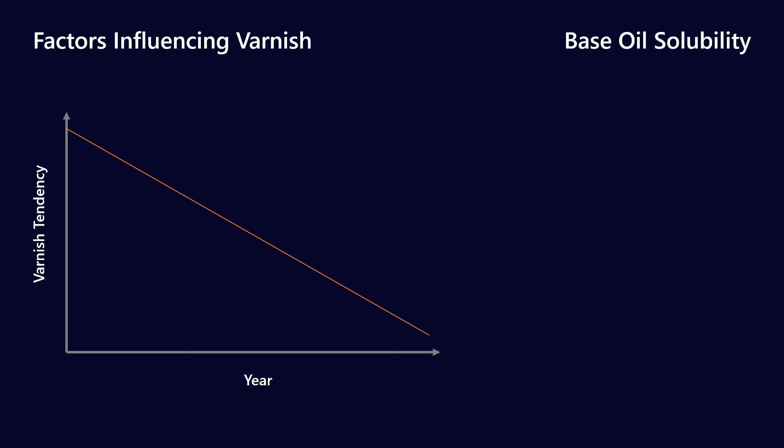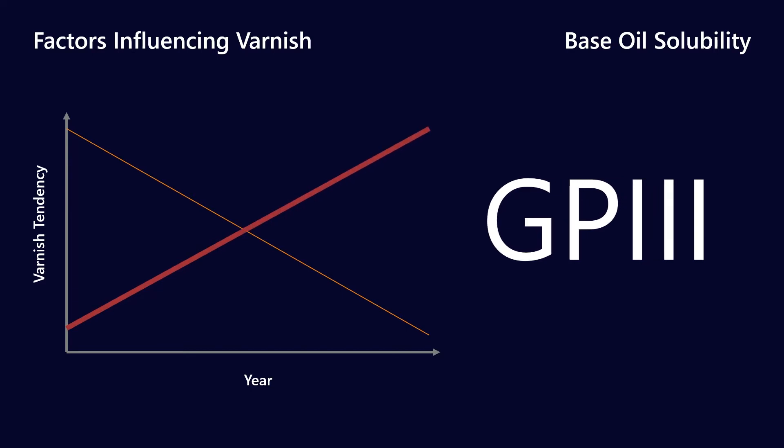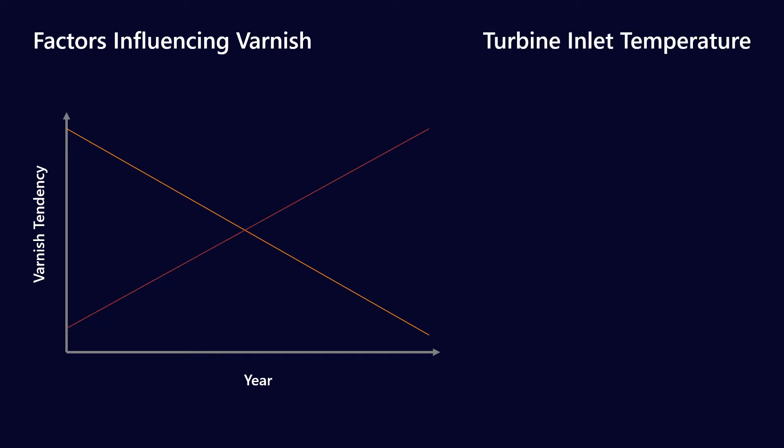However, as you change the base oil, you're also affecting base oil solubility. As covered in my previous video on API base oil groups, as you move from Group I to Group III you're actually reducing the solubility of the oil — particularly as you pull out some of the aromatic compounds, solubility decreases significantly. Solubility is something you need to prevent varnish: if you can hold components in solution so they never plate out, you won't have varnish. But with poor solubility, varnish precursors tend to plate out more easily, contributing to increased varnish tendency.